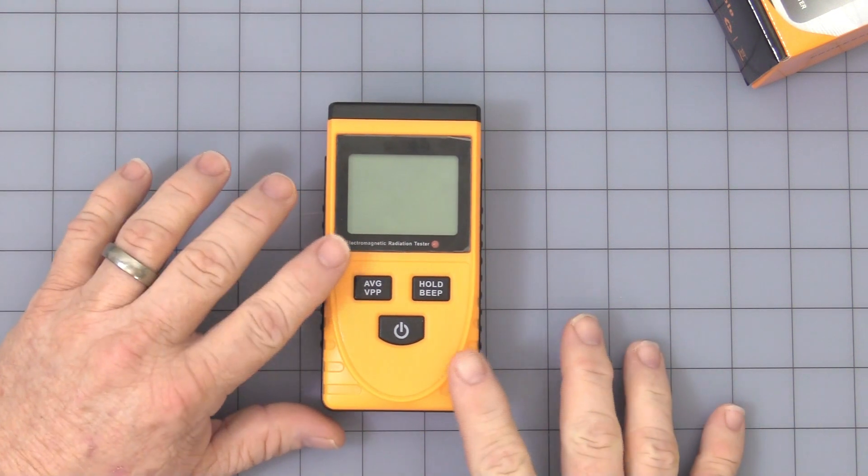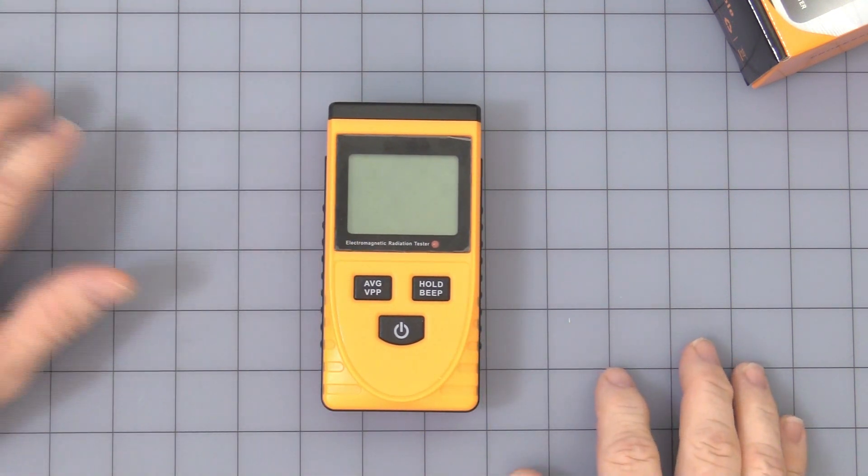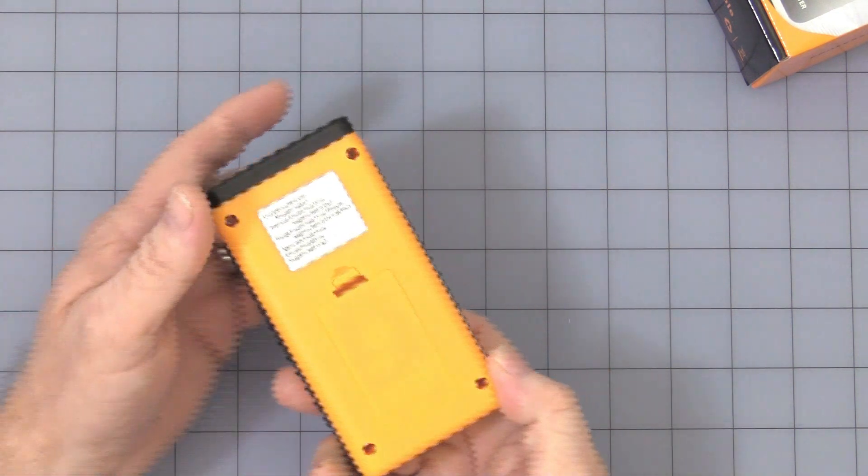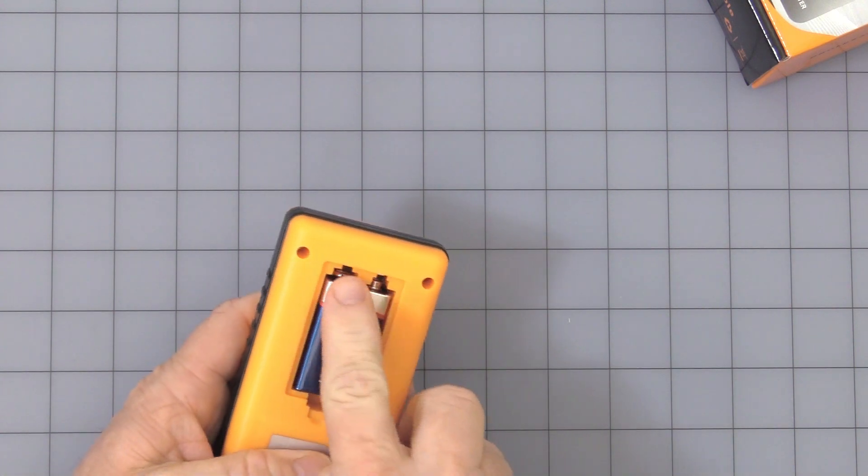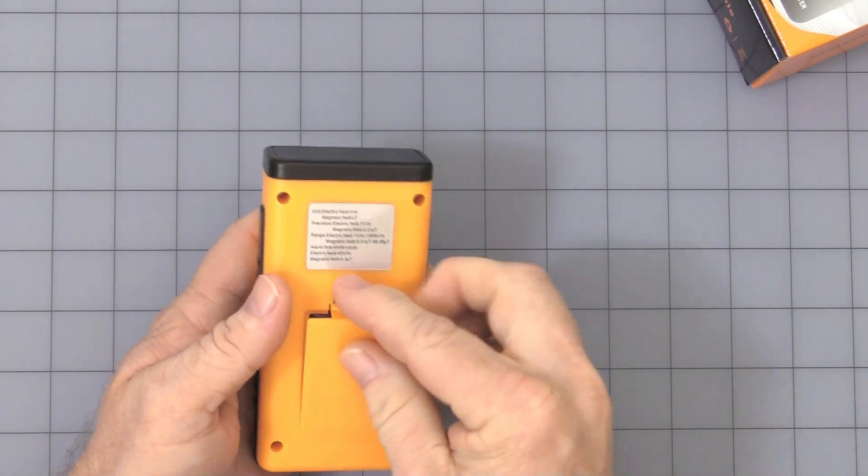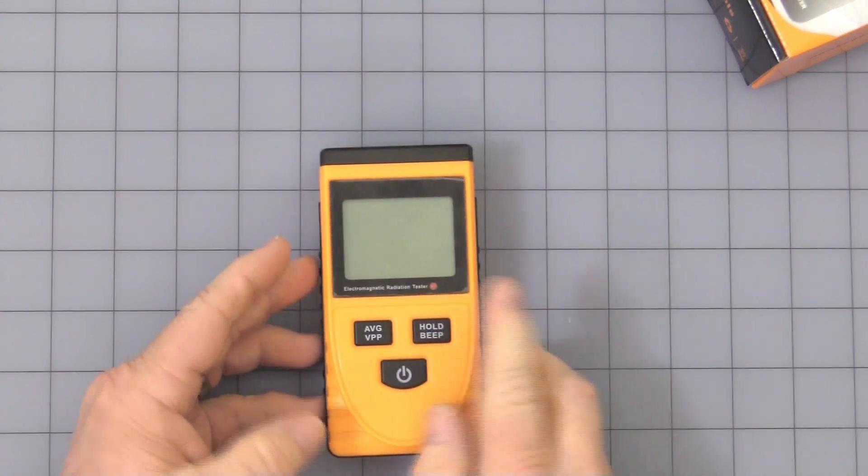The back has a nine-volt battery snap. As you can see, each side is slightly different, so you cannot put the battery in backwards.